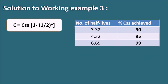We can make a table of number of half-lives and percentage of CSS achieved. To achieve 90% of CSS the drug requires 3.32 half-lives; to achieve 95%, 4.32 half-lives; and for 99%, 6.65 half-lives. A memory tip: at 90% it is 3.32 half-lives; at 95% add one to get 4.32; at 99% it is double the 90% value — 3.32 × 2 ≈ 6.65.